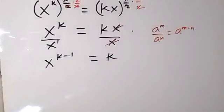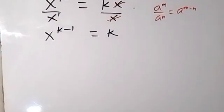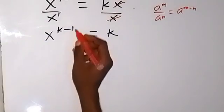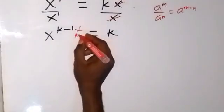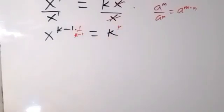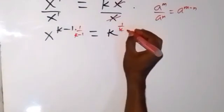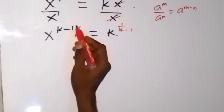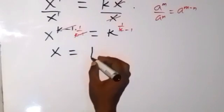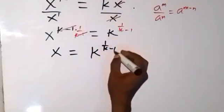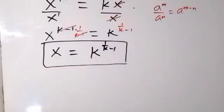This equals k. Since I'm finding the value of x in terms of k, I want to remove the power of k minus 1 by multiplying both powers by 1 over k minus 1. So 1 over k minus 1 cancels k minus 1, and we are left with x equals k raised to power 1 over k minus 1. This is the value of x in terms of k.